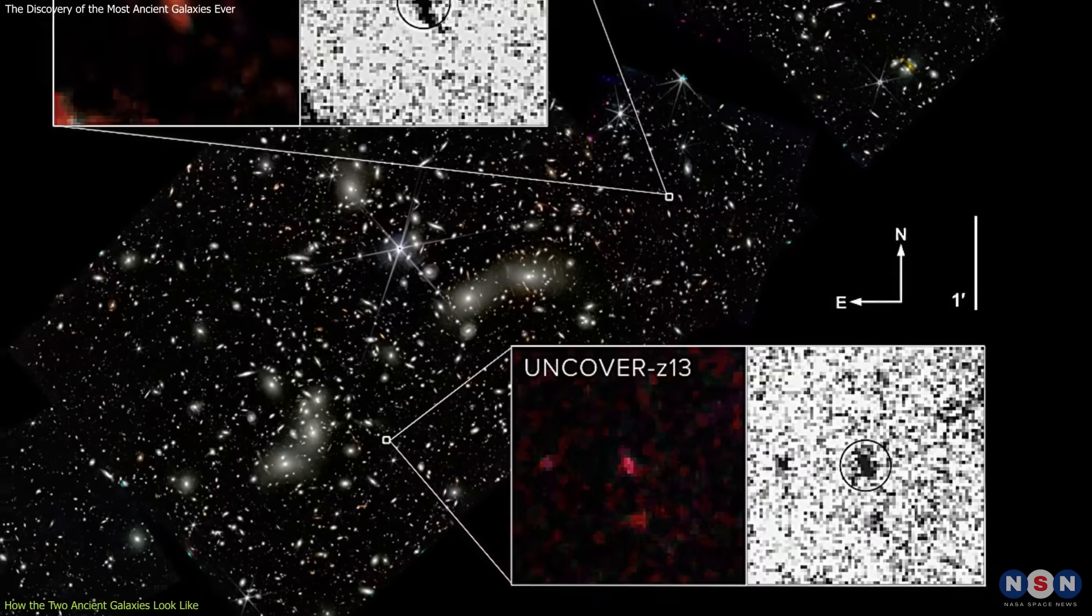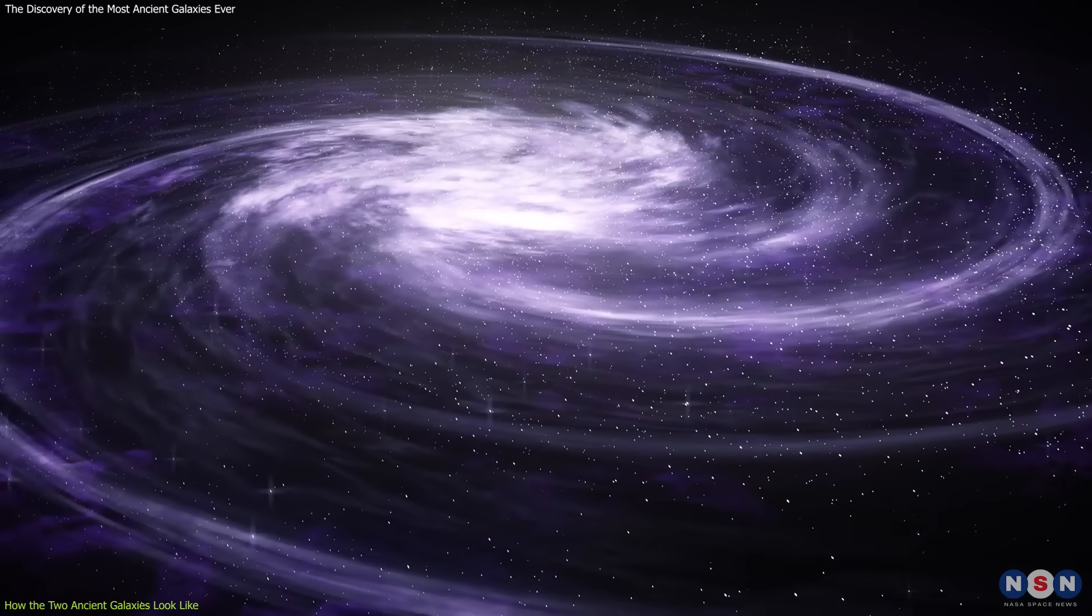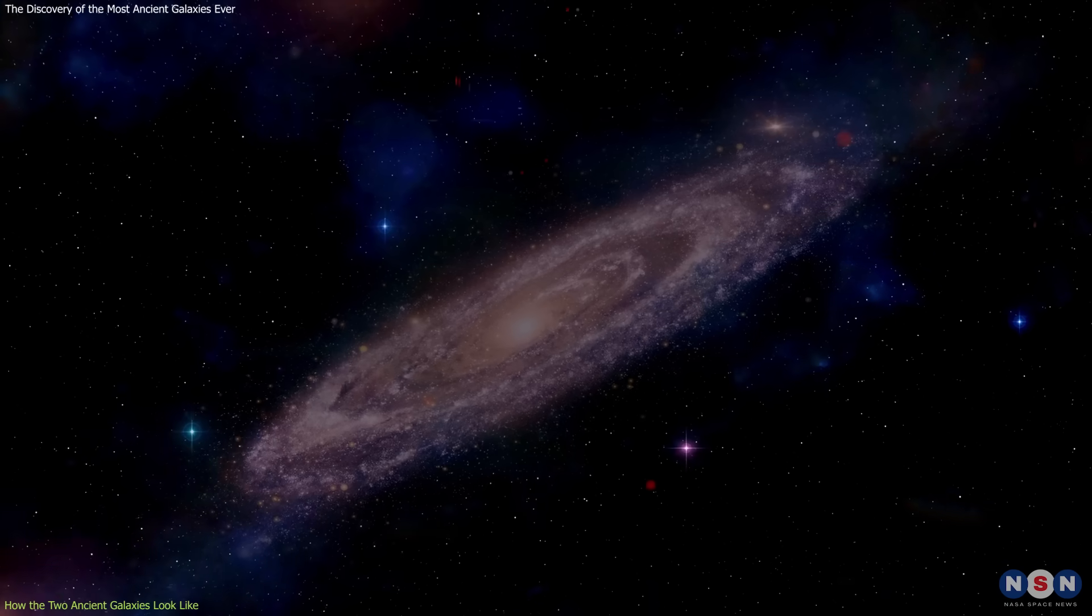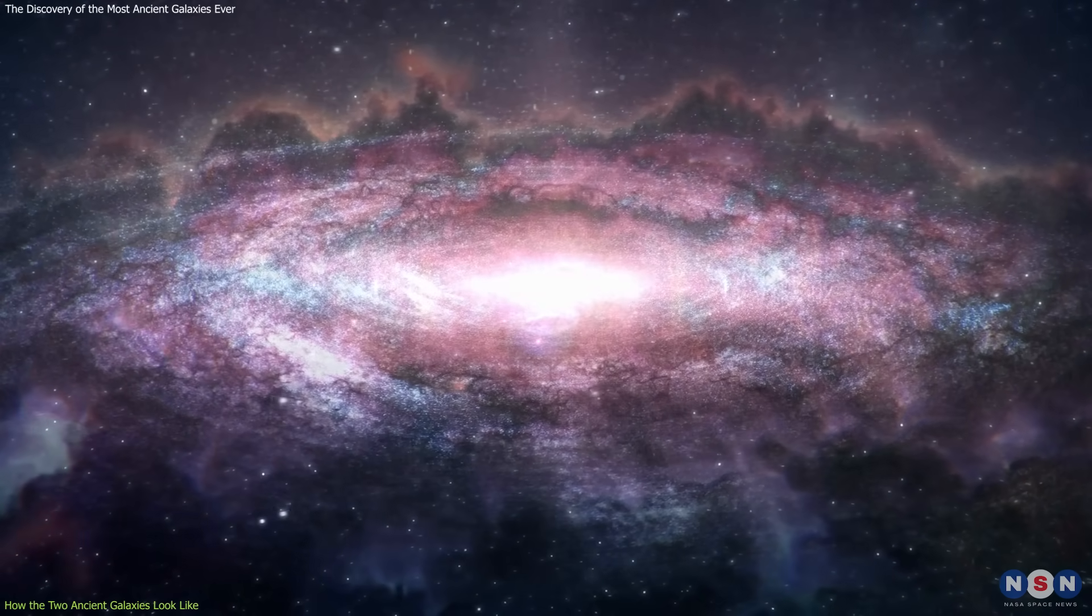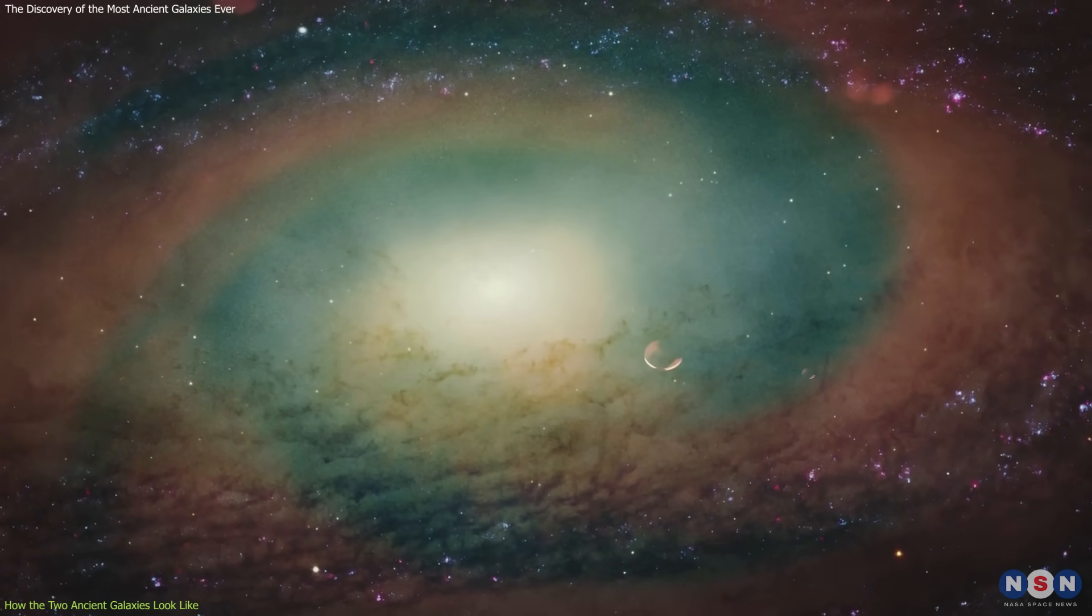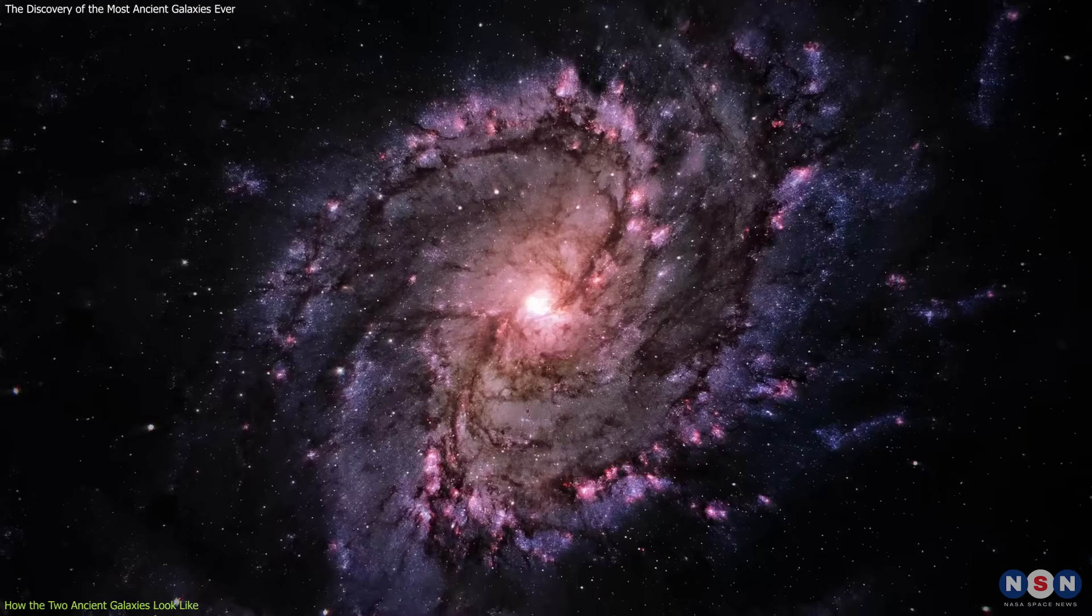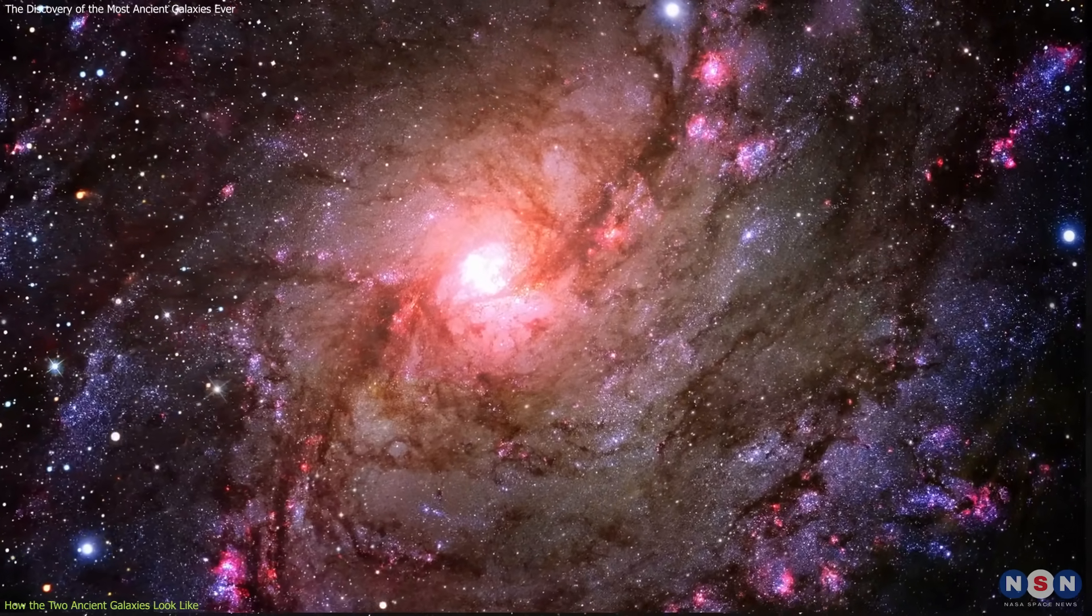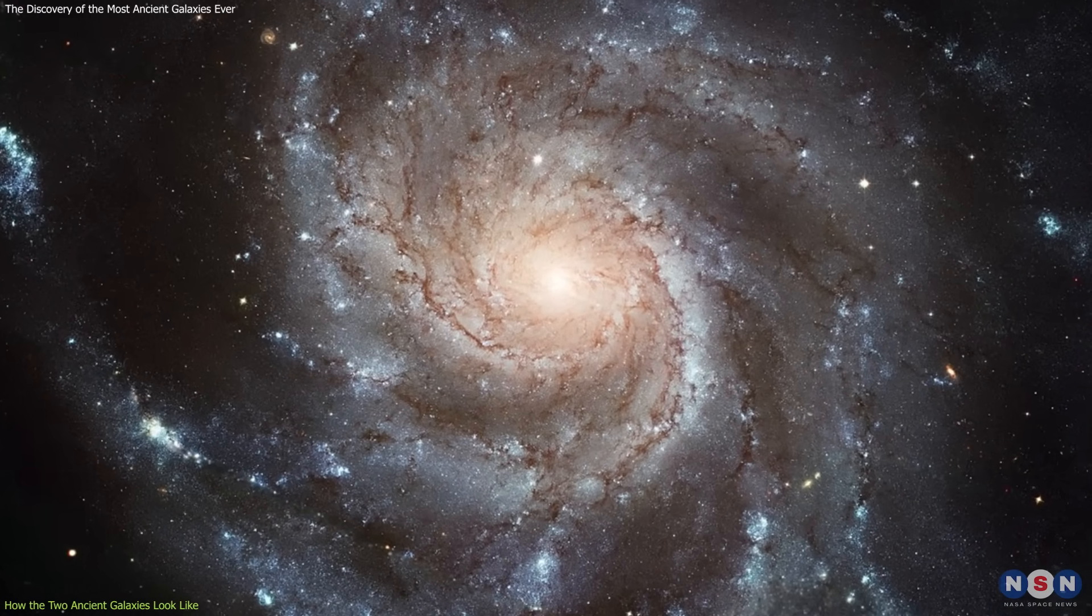The fourth most distant galaxy, named Uncover Z13, is very large, elongated, and irregular, with a diameter of about 6,000 light-years, which is comparable to the Milky Way. It is also very faint, red, and cold, with a temperature of about 10,000 degrees Celsius, which is about twice as hot as the sun. It has a very low star formation rate of about 0.1 solar masses per year, which means that it is producing new stars at a very slow pace, preserving its gas reservoir for a long time. This galaxy is likely an old and evolved galaxy, one of the rare ones to survive the harsh environment of the early universe, and it may be the ancestor of the spiral galaxies that we see today.